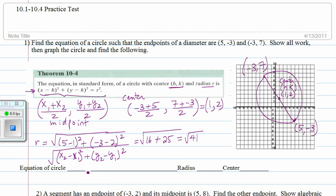So the equation of the circle is, we're going to use this. So x minus h, this is our h, that's one, that's the x part of the center, plus y minus two squared equals square root of forty-one squared, which is forty-one.